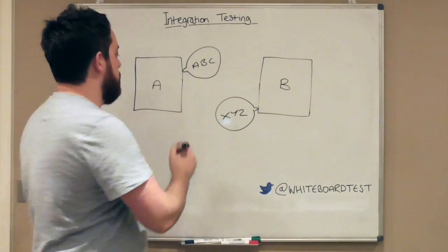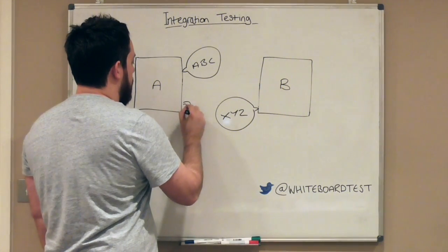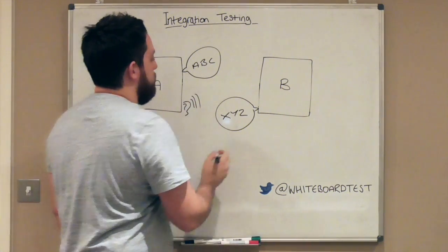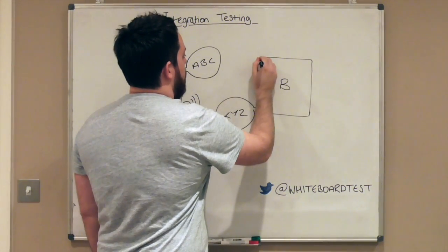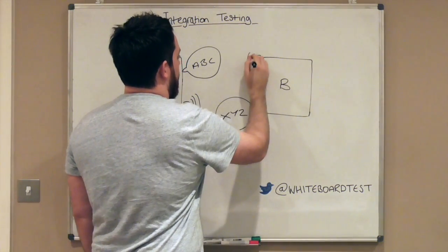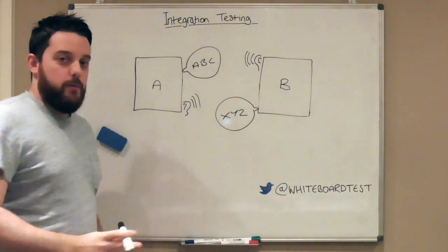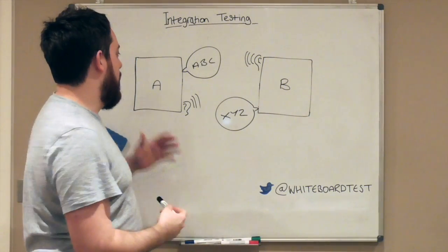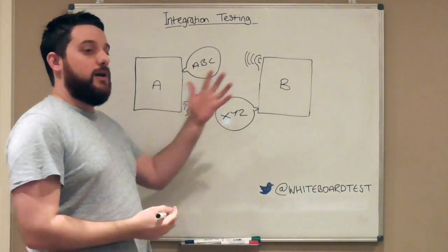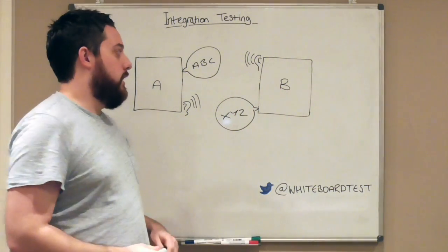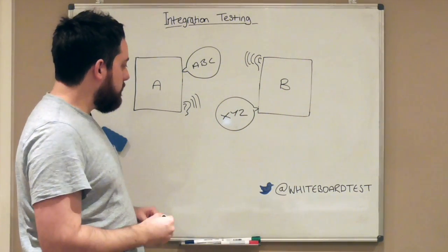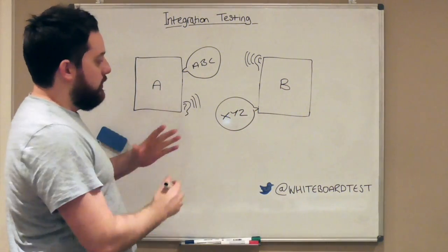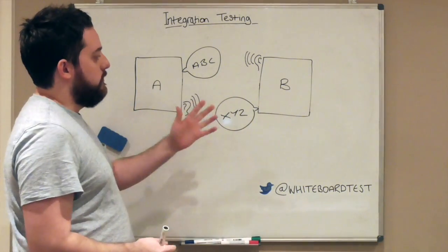And both of them like to listen. So A likes to listen, so it has an ear and it's listening for some stuff. And B also likes to listen. So a lot of people, when they think about the integration testing that they're doing, they're normally talking about how A says something that B may consume. And that's really basic level.